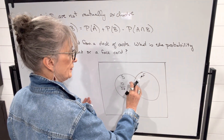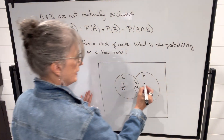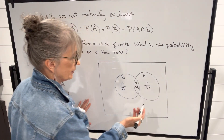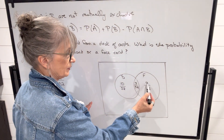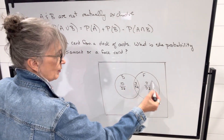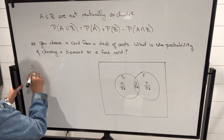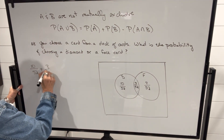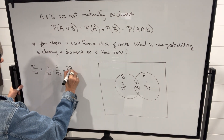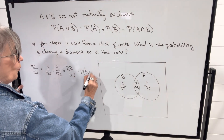Similarly, a face card that's not a diamond: if there are 12 face cards in total and three are diamonds, that means nine aren't diamonds. So the probability of choosing a face card that's not a diamond is 9/52. This now represents the probability of a diamond or a face card. If we add these three values up, we get 10/52 plus 3/52 plus 9/52, which equals 22/52 — that represents the probability of choosing a diamond or a face card.